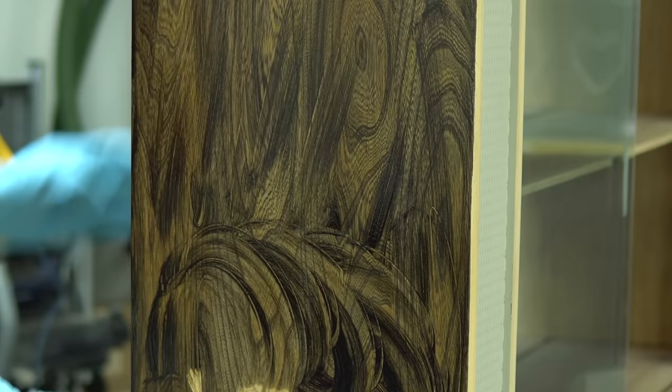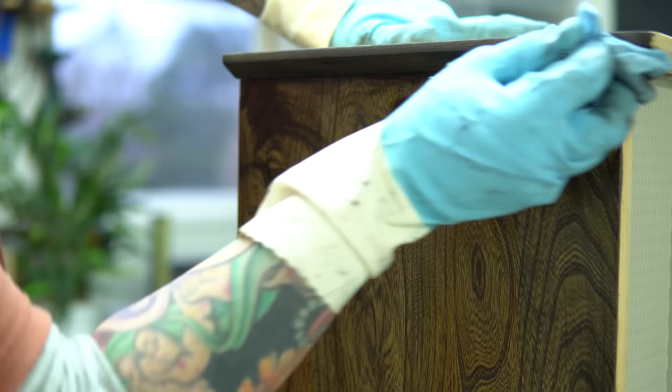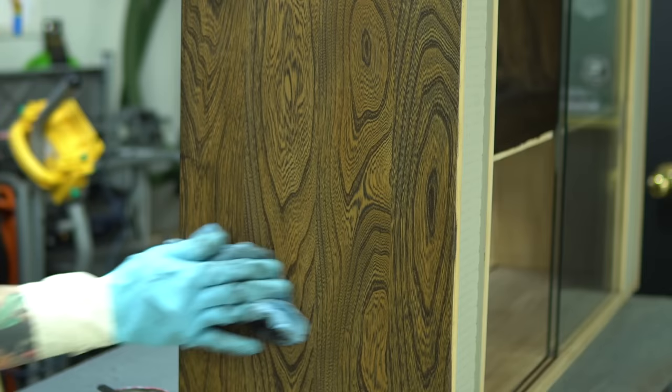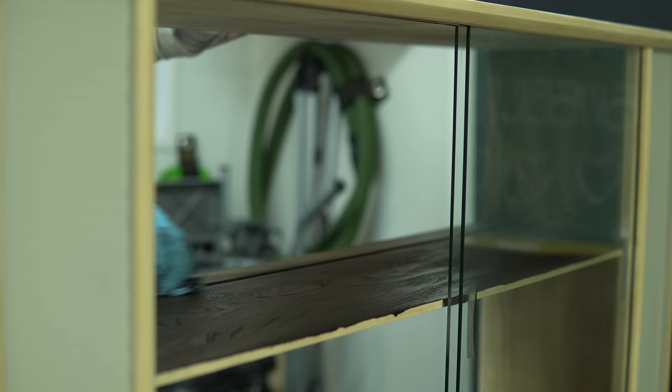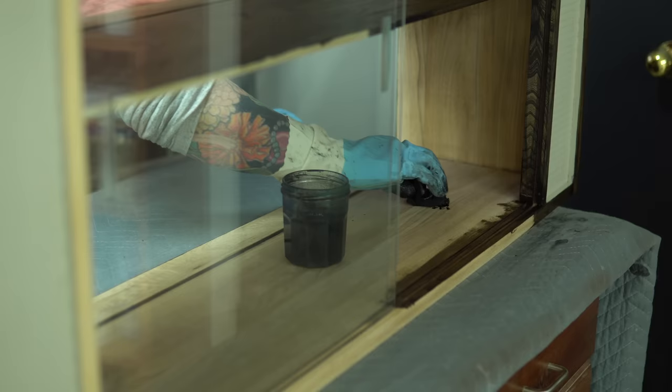So if I had kept sanding and gotten every little piece of that dye stain out, there wouldn't be much grain to look at. And it just settles in so nicely and brings out the natural variations in the wood. Elm is an amazing wood for staining because of how crazy and wild the grain pattern is.